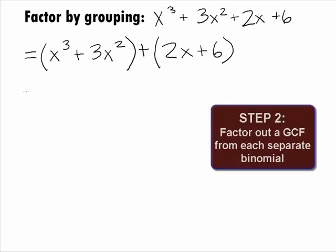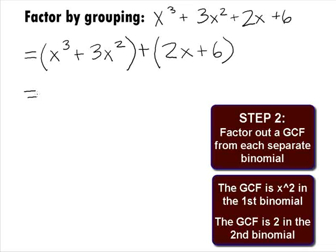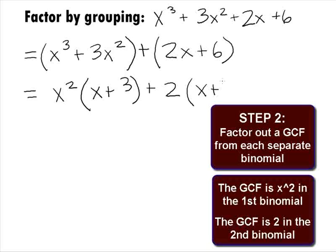In Step 2, we need to factor out a GCF from the first two terms and then the last two terms. The GCF of the first group is x squared. Factoring it out, we get x squared times x plus 3. In the second group, the GCF is 2. Factoring that out, we get 2 times x plus 3.